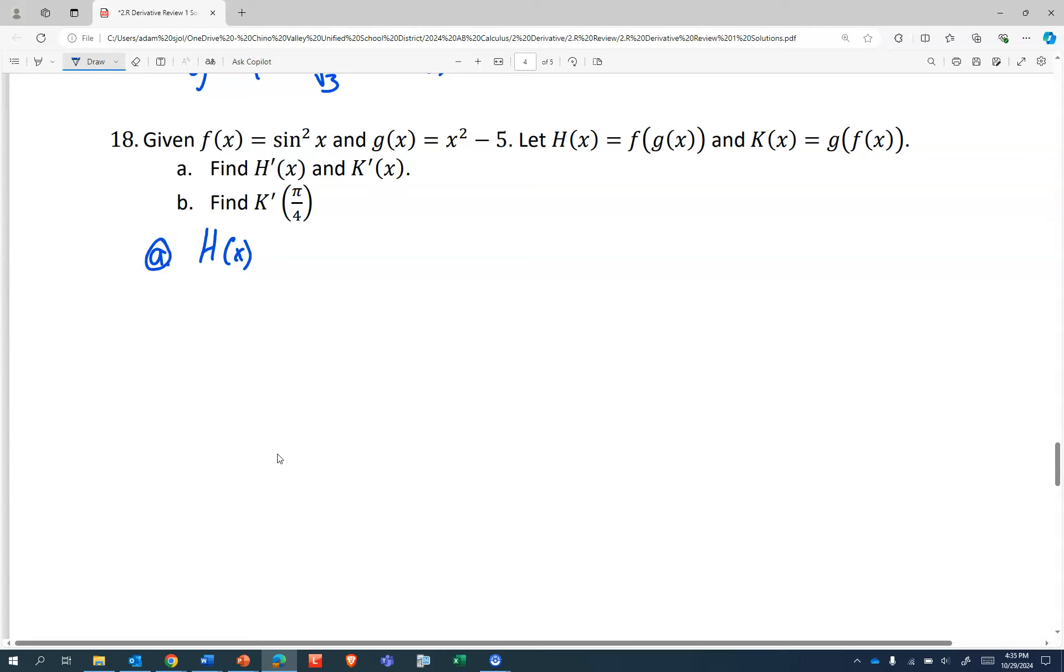Part a, if I'm going to find h', I think I want to write h with the functions we have. f is on the outside, so that's going to be sin of something all squared, because that's what it says sin²x is. f(g(x)), so in here I'll do x² - 5. So k(x) is g(f(x)), so that's something squared minus 5. And what's inside? f(x), so sin²x.